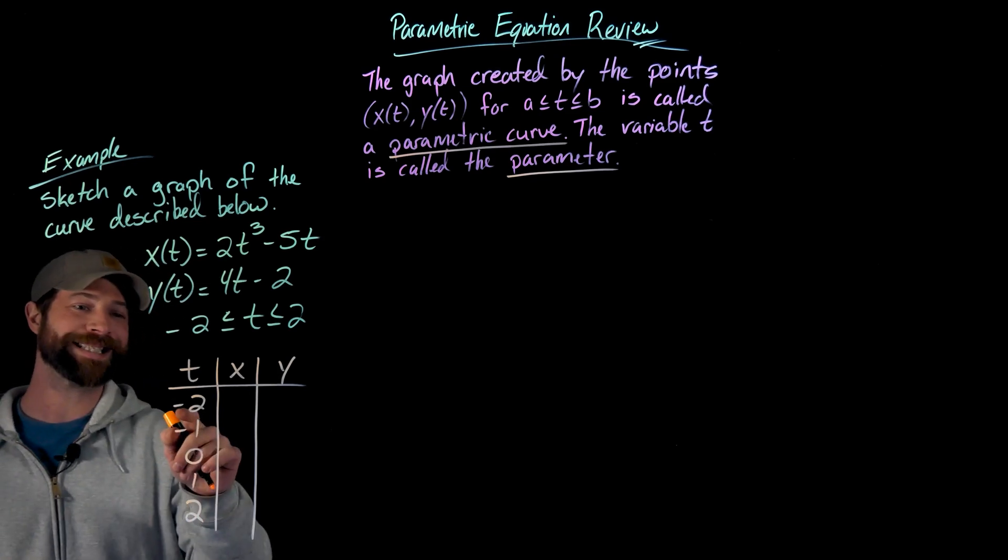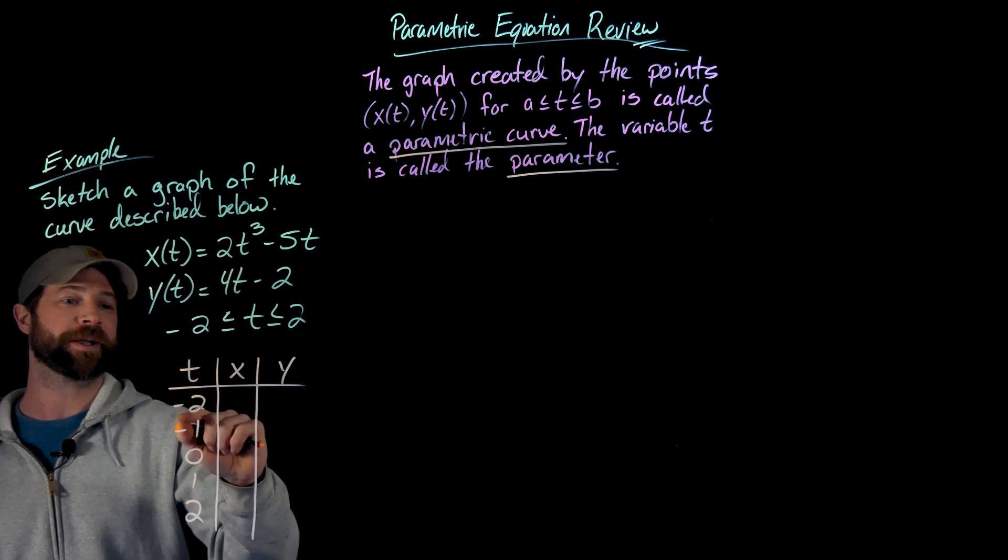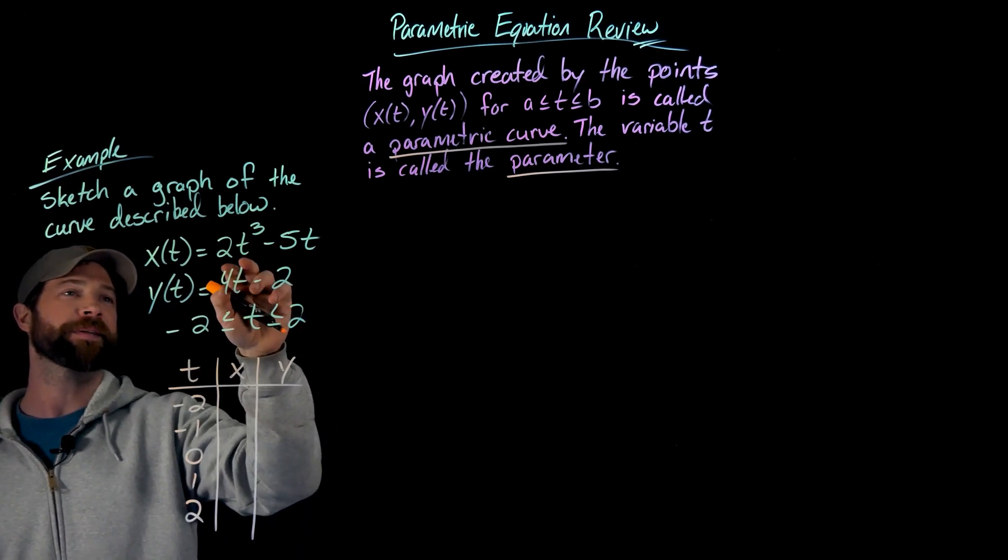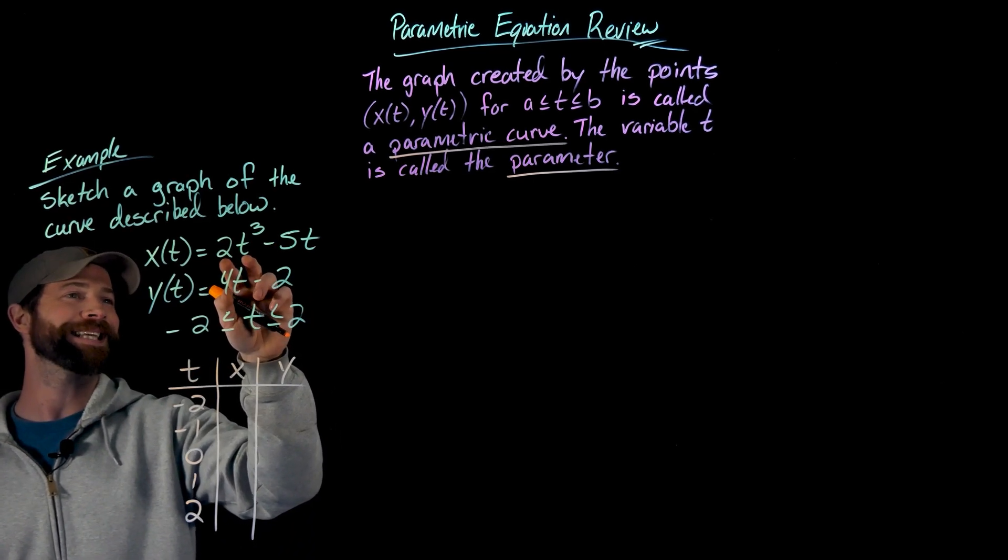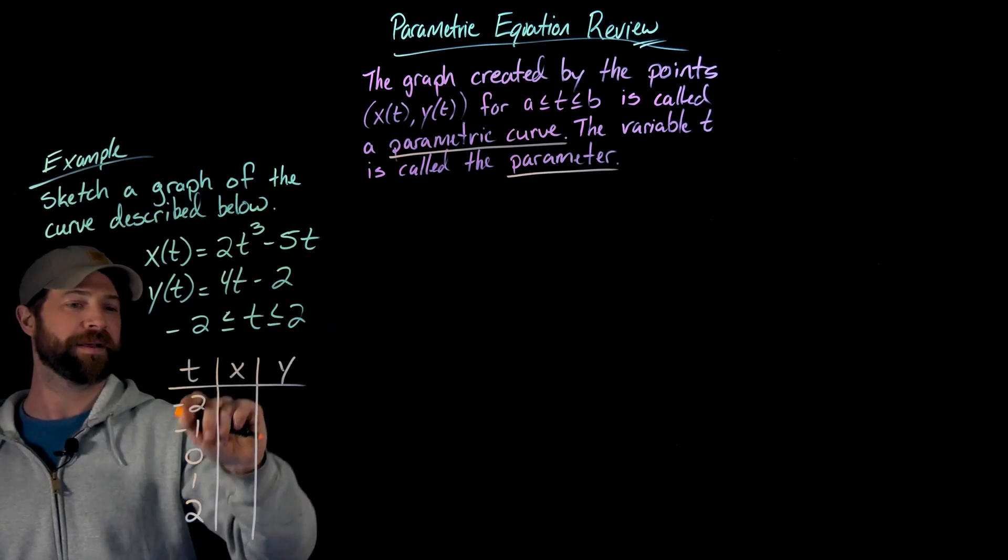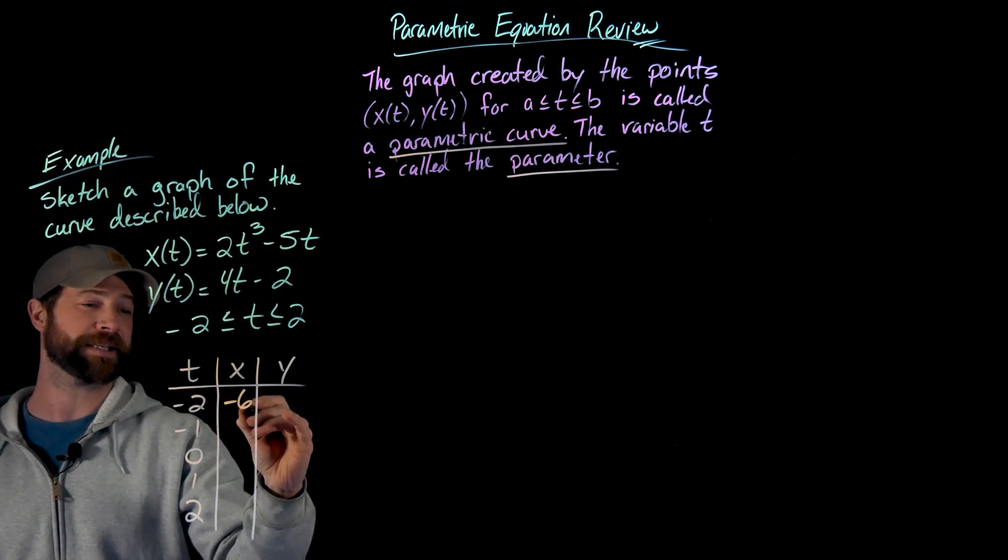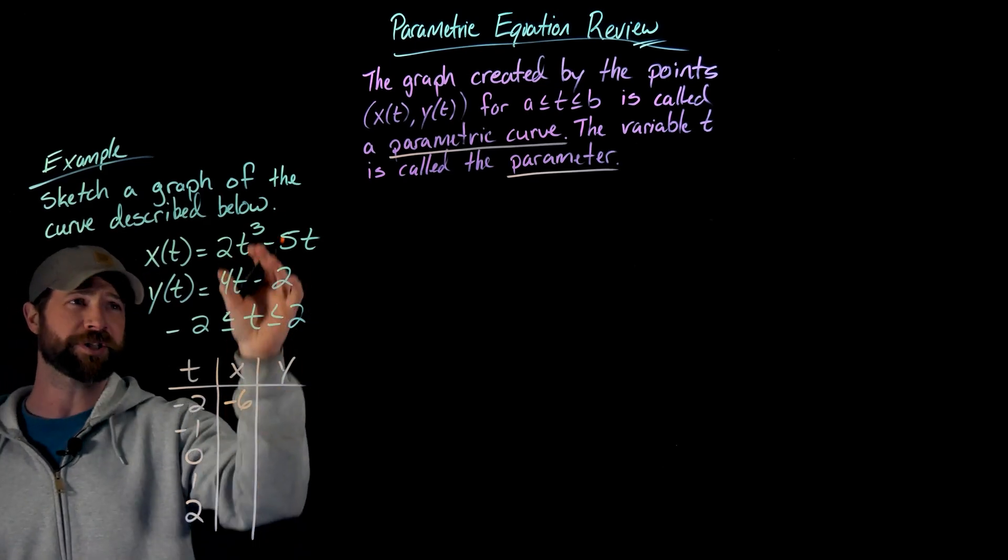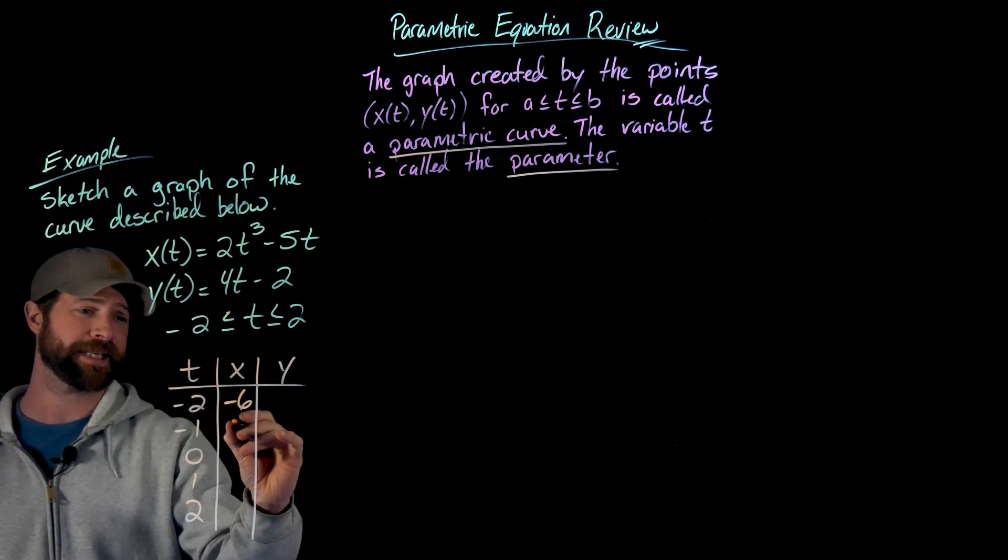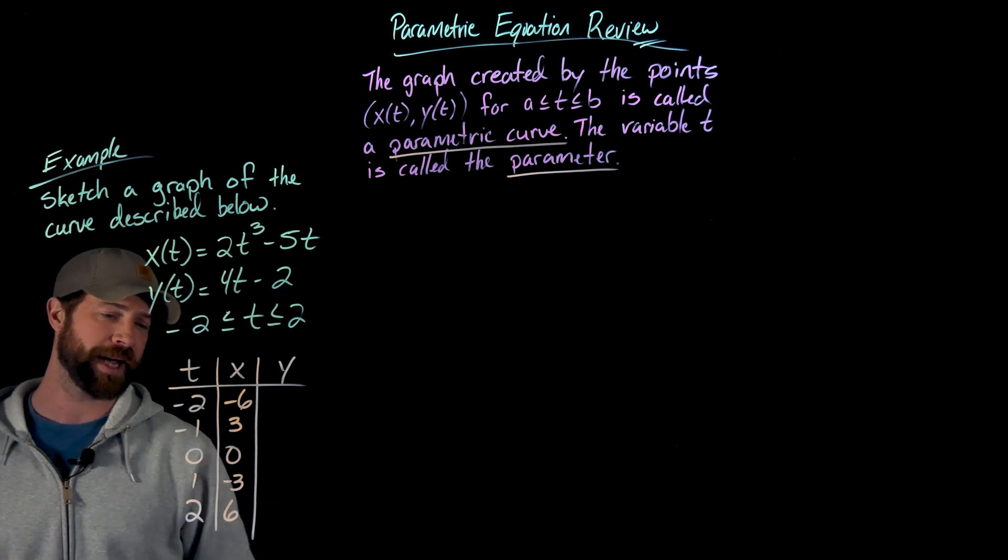So when I plug negative two in for t for this x value right here, I'll get negative two to the third is negative eight. Negative eight times two is negative sixteen, and then this will become a plus ten from the negative two. So negative sixteen plus ten gives me negative six. And I won't walk through all these, it's just simply plugging these in and evaluating, but I did this just a second ago and these are the values that I got for my x.